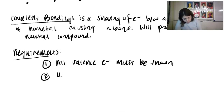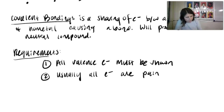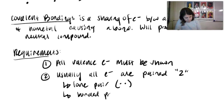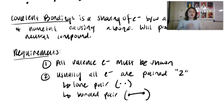Requirement two: usually, all electrons are paired — everything needs a friend. This can be a lone pair, shown as two dots, or a bonded pair, shown as a line. You can also draw the two dots for a bonded pair as well.